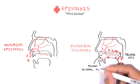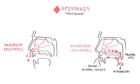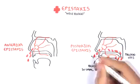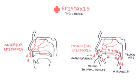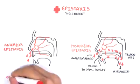It is a posterior epistaxis if you can see blood in the oral cavity as well as coming out of your nose. And again, posterior nosebleeds are more serious and bleed a lot more.